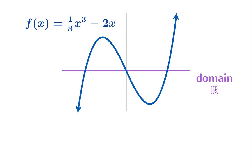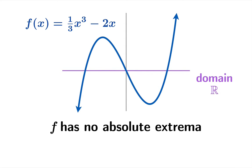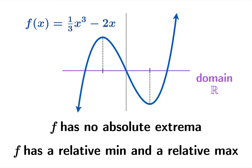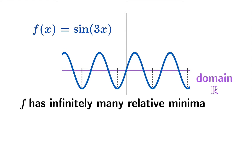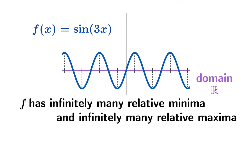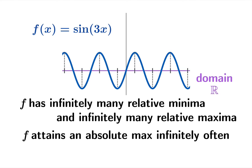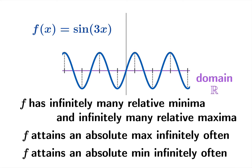How about the cubic function (1/3)x³ − 2x? Again, the domain is all real numbers. f has no absolute extrema because you can make the function value as large as you want, or as large in absolute value and negative by choosing arguments to the left or right. But there is a relative minimum and a relative maximum. Finally, for sin(3x), there are infinitely many relative minima and infinitely many relative maxima, and f attains its absolute maximum and absolute minimum values infinitely often as well.